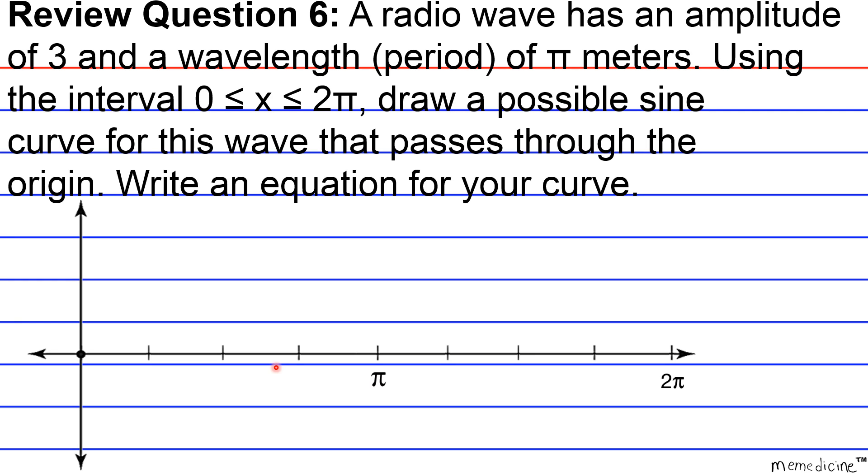Alright, now that that's done, the amplitude is 3. So the graph will have to go up to a maximum of 3 and down to a minimum of -3. Because remember, amplitude is—or recall, or if you don't know now you're going to know—amplitude is an absolute value, so it can go in either direction.